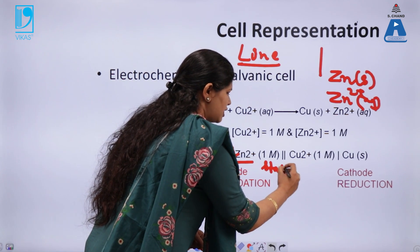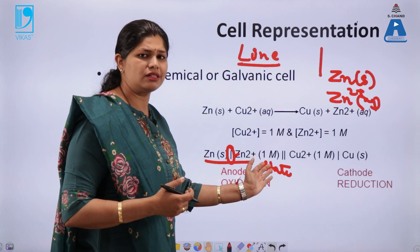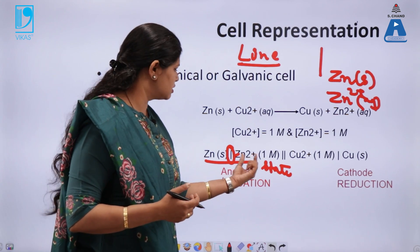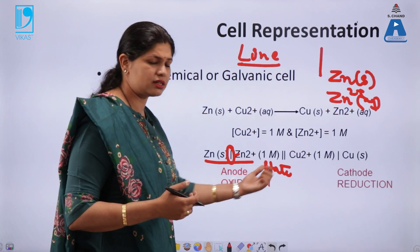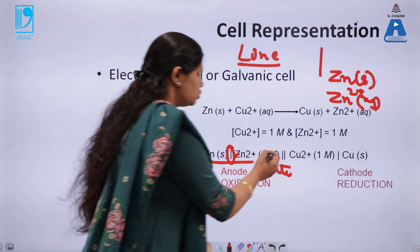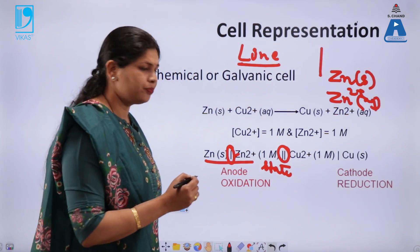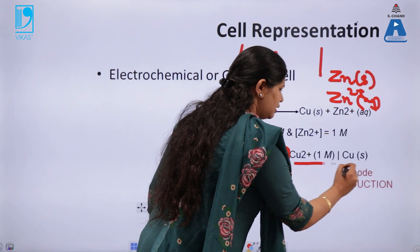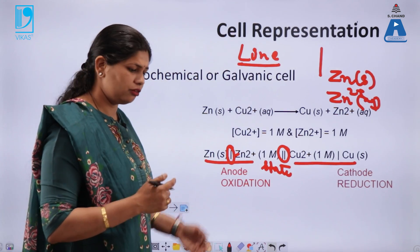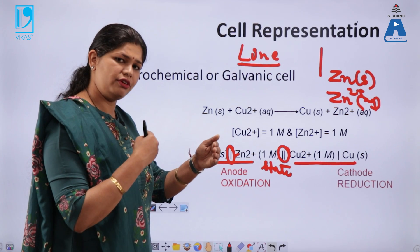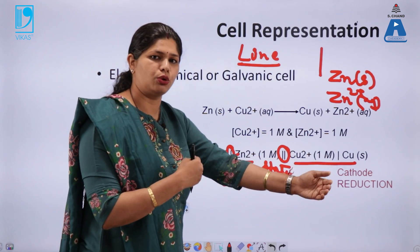In the parenthesis, we write the concentration or state of the system. If it is aqueous, we write aqueous — so whatever the concentration of zinc sulfate is, we write it in the parenthesis. The two double lines represent the salt bridge, and then the cathodic half cell is represented. We always start with the anodic part, then the salt bridge, then the cathodic part.